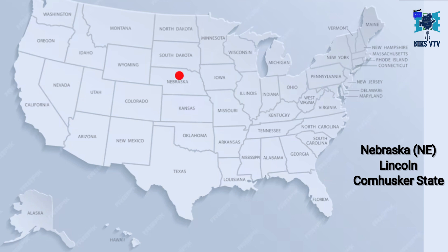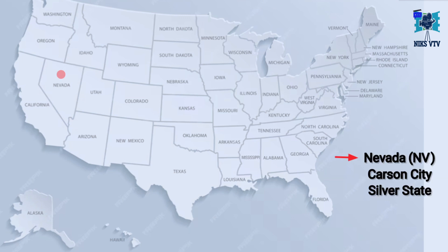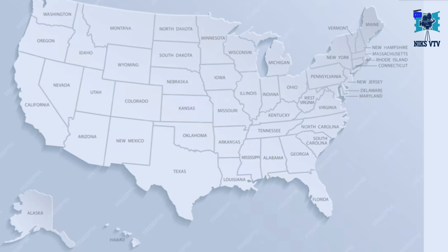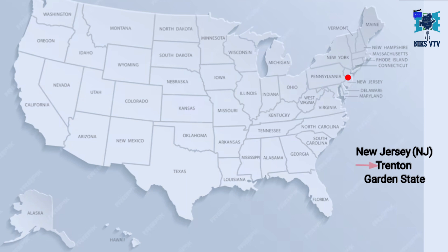Next state is Nevada, its abbreviation is NV, its capital is Carson City, its time zone is PST. Next state is New Hampshire, its abbreviation is NH, its capital is Concord, its time zone is EST, and its nickname is Granite State. Next state is New Jersey, abbreviation is NJ, capital is Trenton, time zone is EST, and its nickname is Garden State.